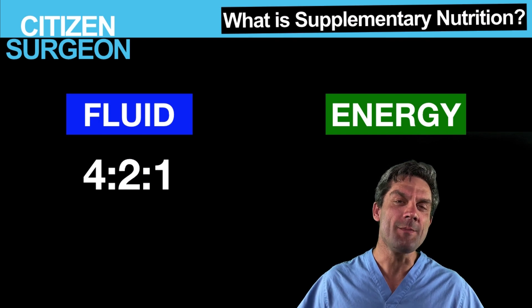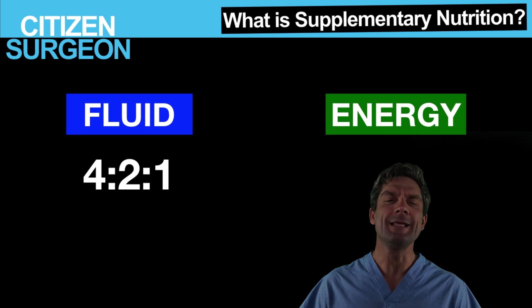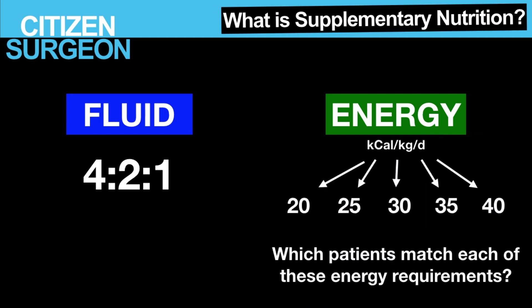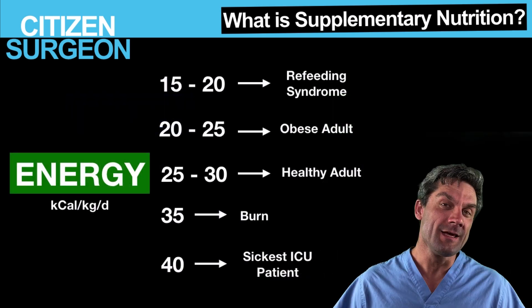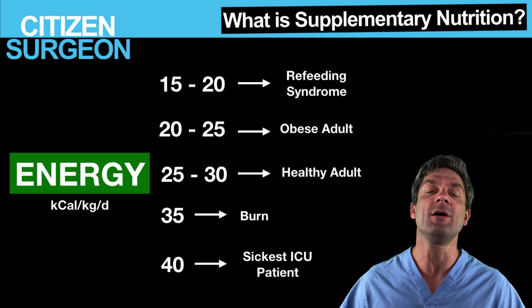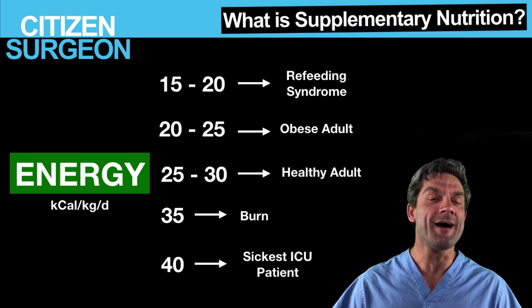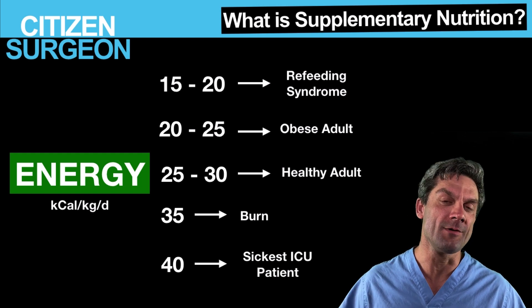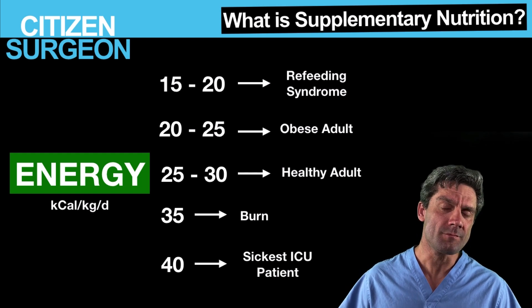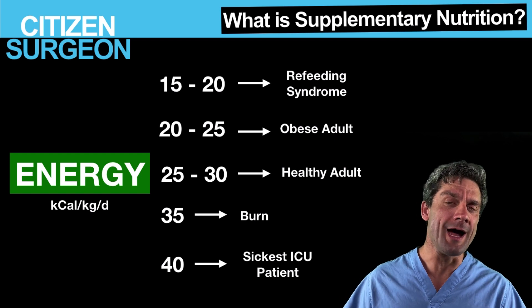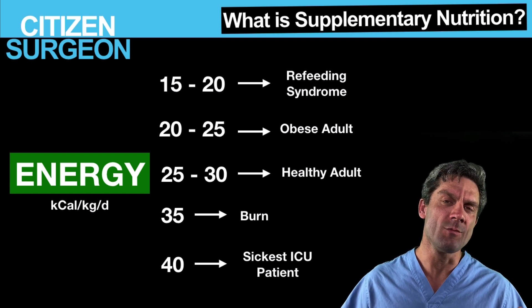Now how about energy? I'm going to put up some kilocalories per kilogram per day values, and I want you to think about which patient in the hospital each value applies to. When we think of energy, your typical healthy adult male is going to be at about 25 to 30 kilocalories per kilogram per day. There's a spectrum from low to high of what energy needs are, and we'll go through those here.